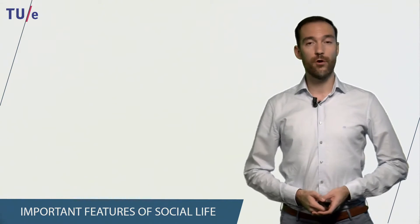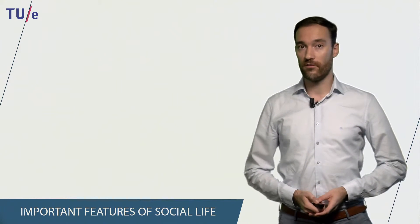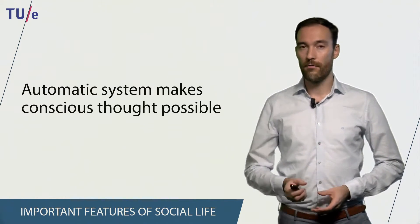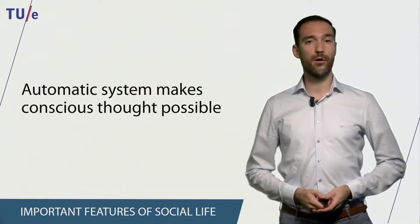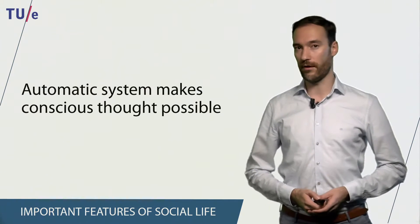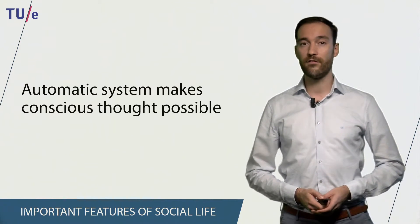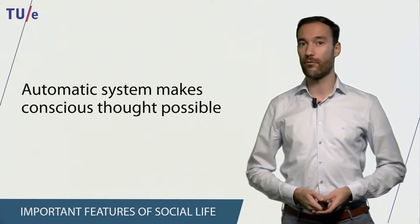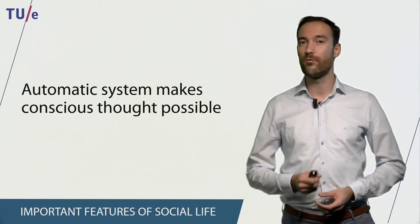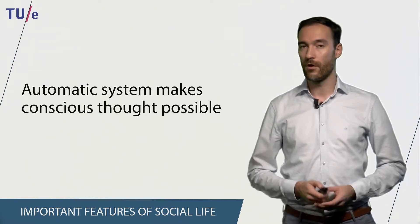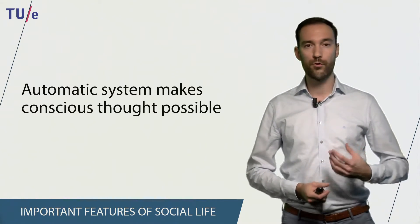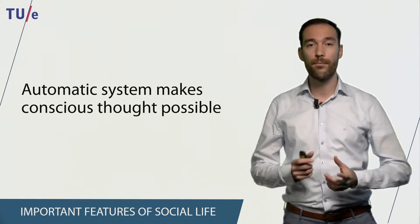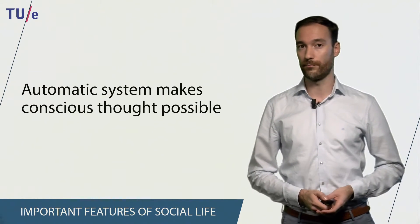Another important feature of the automatic system is that it makes deliberate thought possible. A very famous example of this is what we call the cocktail party effect. This is an effect in which you overhear your name being said in a conversation that you are not really listening to. So in a way, your automatic system works as an alarm system that tells you that something might be important for you to listen to.